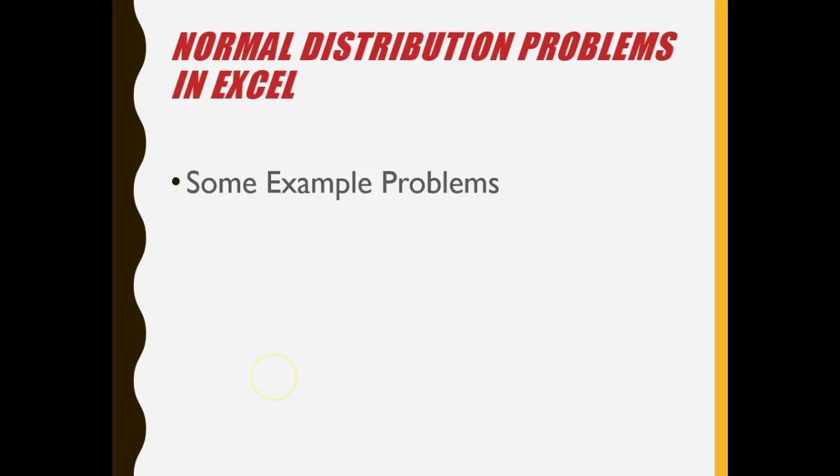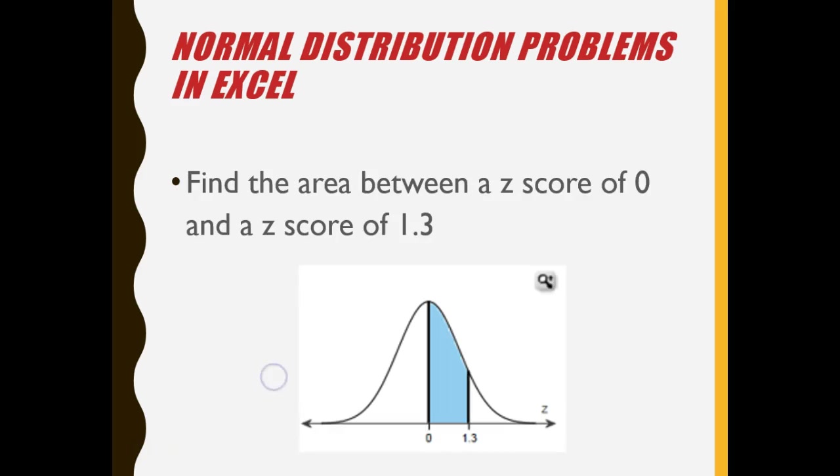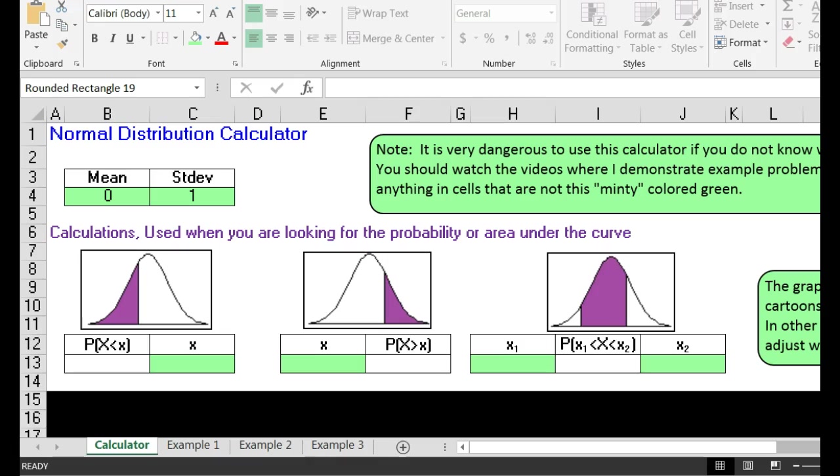Let's look at an example problem. First of all, a z-score problem. We can do this with my magical calculator. Find the area between a z-score of zero and a z-score of 1.3. When we are dealing with z-scores we are dealing with the standard normal distribution. That has a mean of zero,